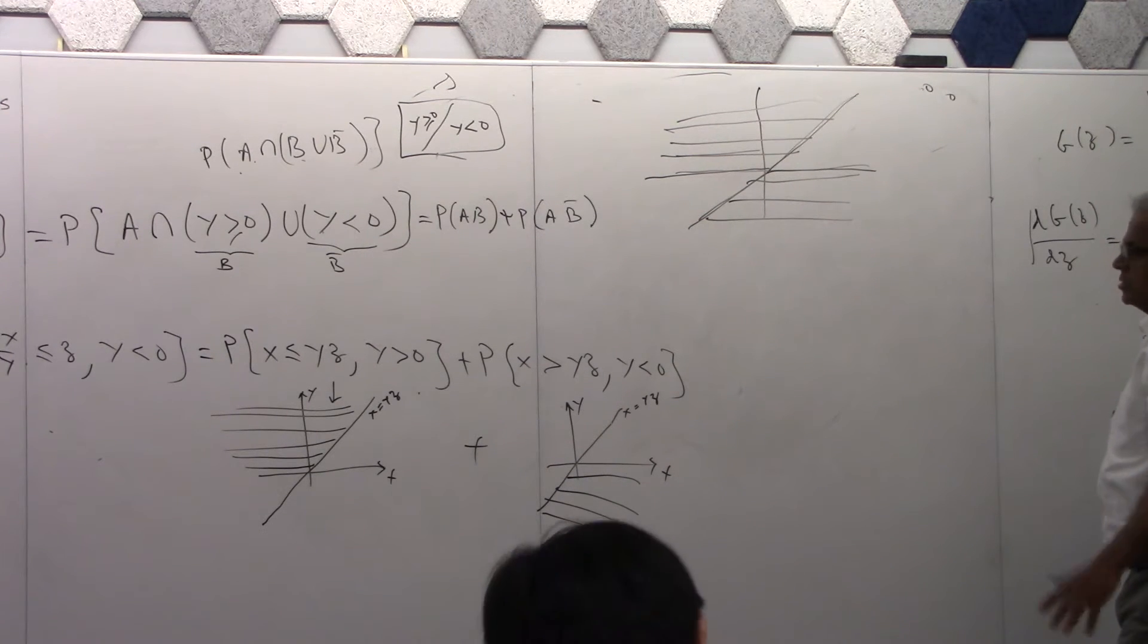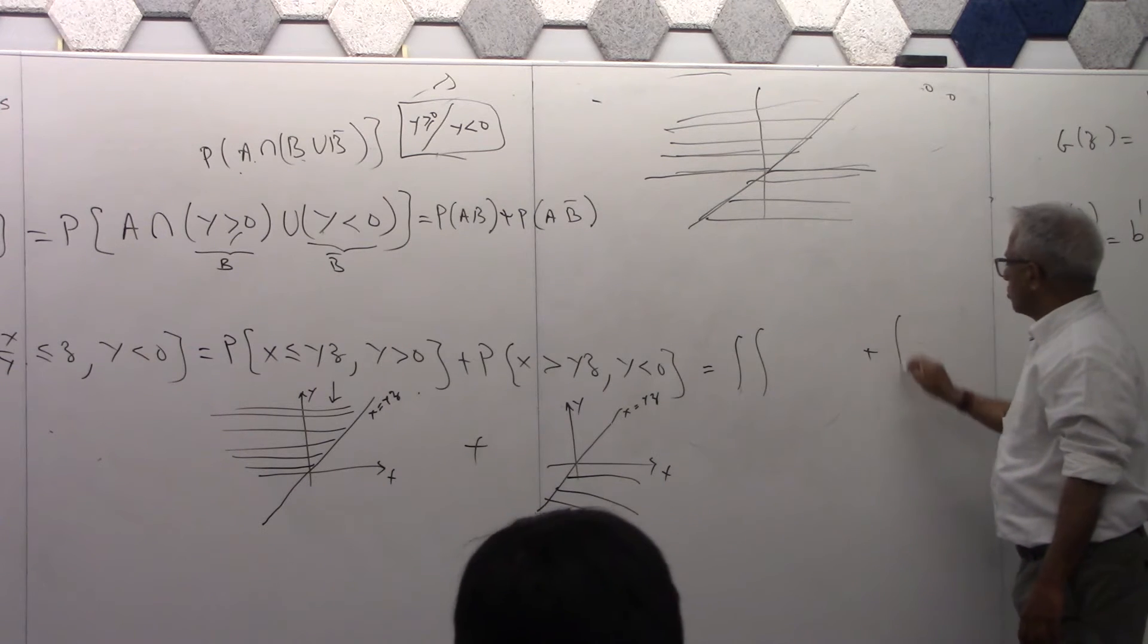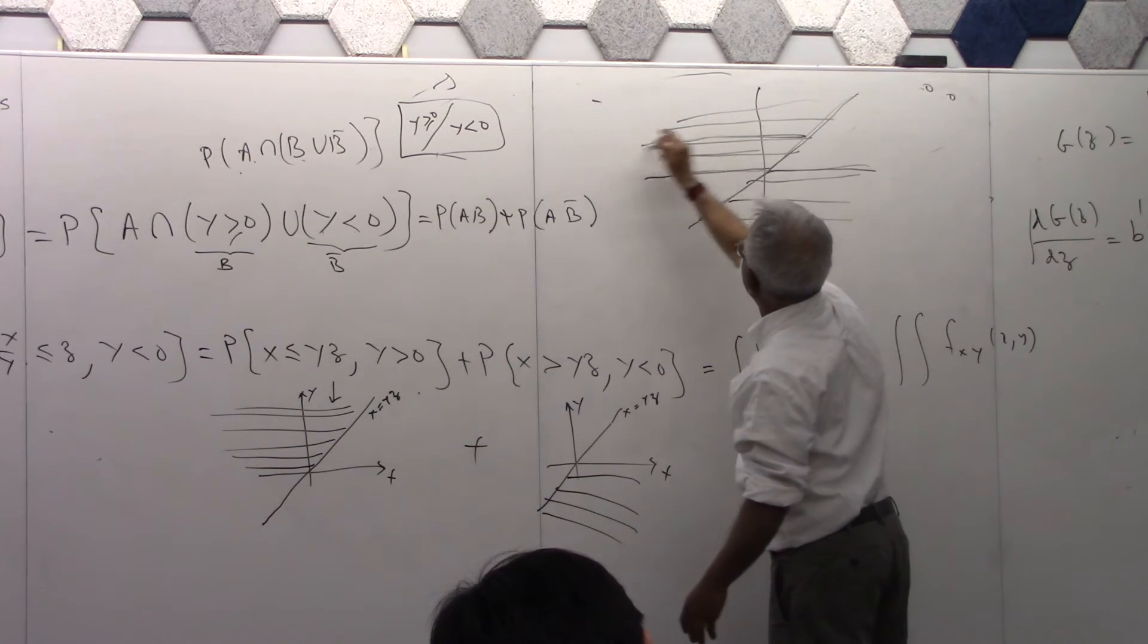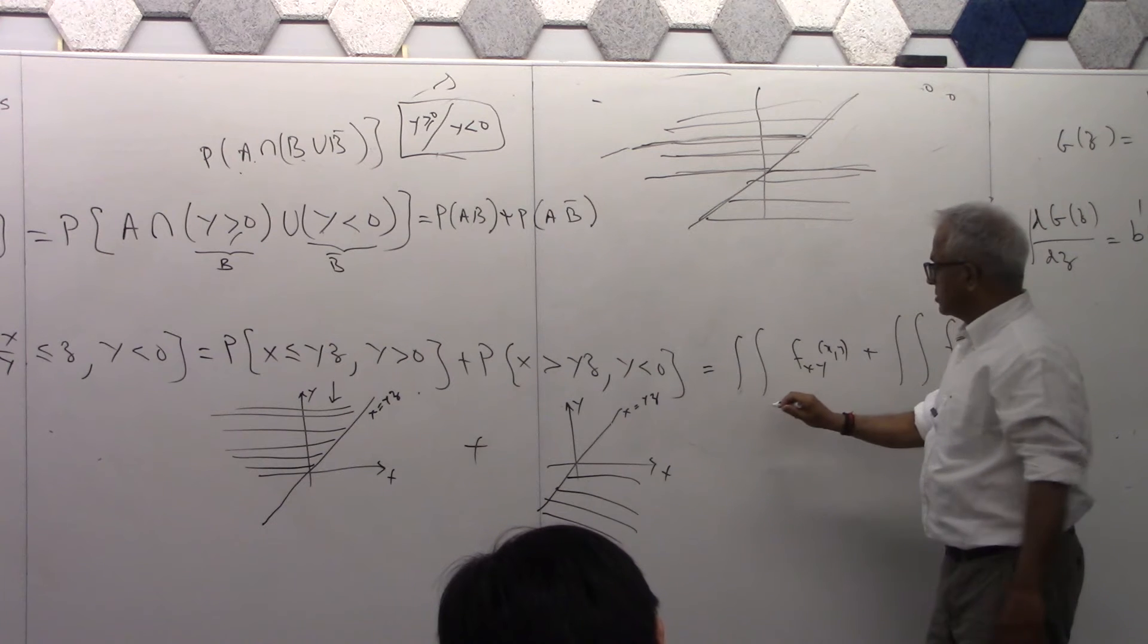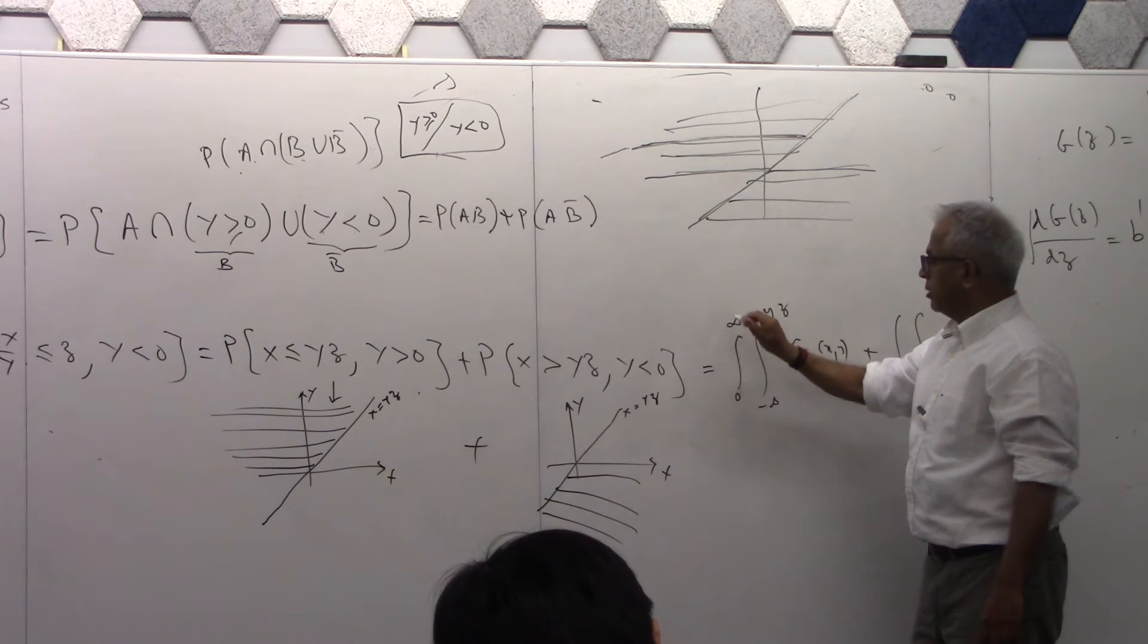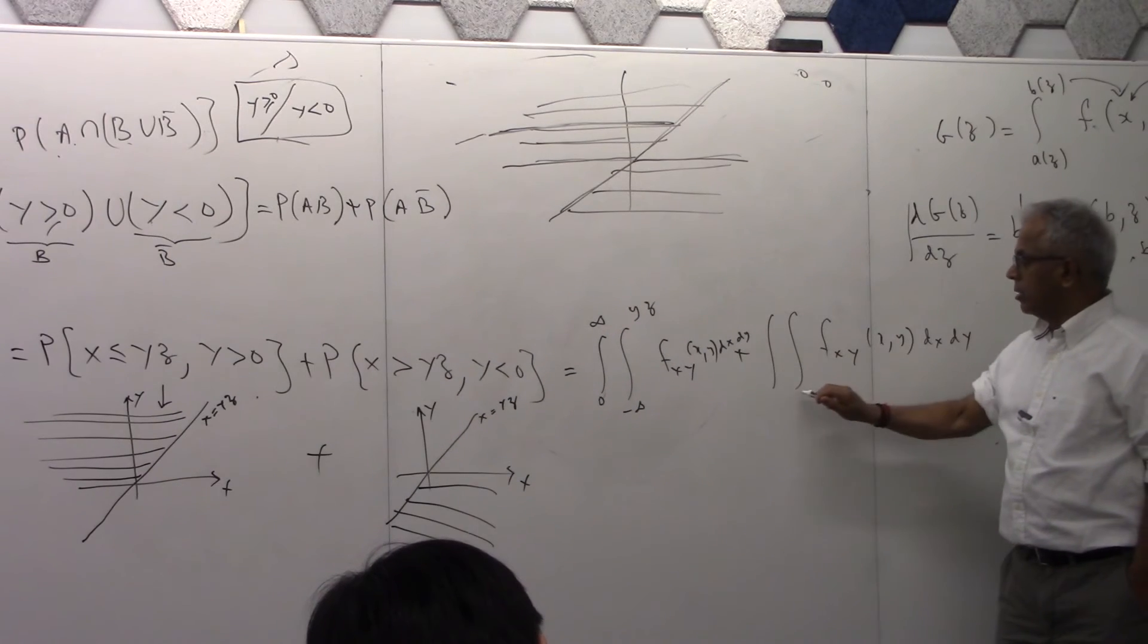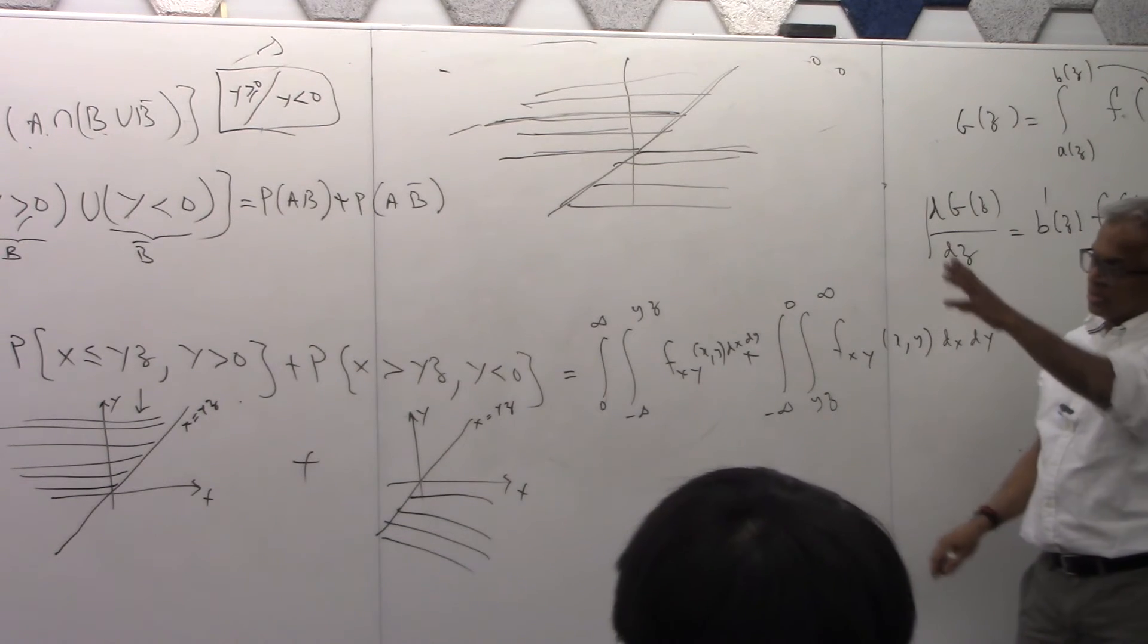You can combine it and say, you are actually integrating here and here. It's easy to figure this out when you write it properly. I'm going to write it as two integrals. Let me do here, I'm going to take a strip like this. X goes from minus infinity up to yz, and the outside integral, y goes from zero to infinity, so this is dx dy. For the second integral, x goes from yz to infinity, and y goes from minus infinity to zero. That's the distribution function.